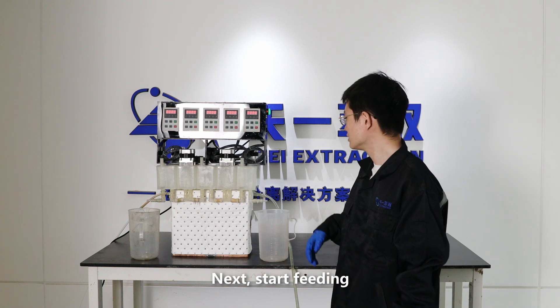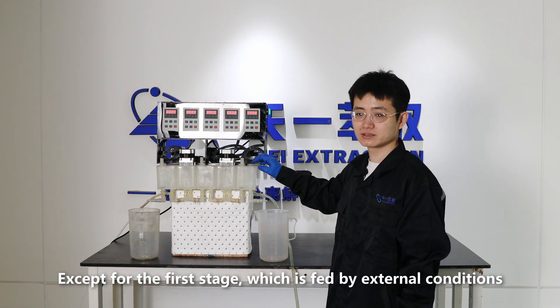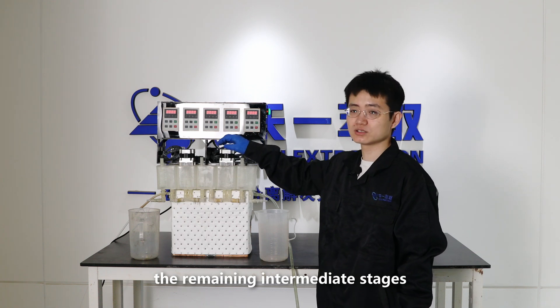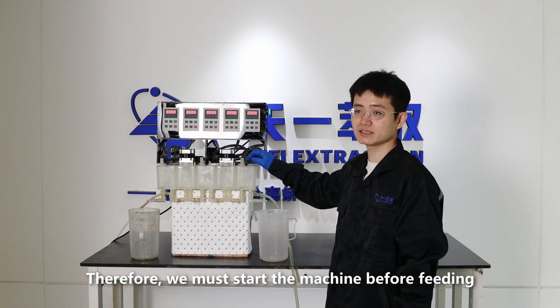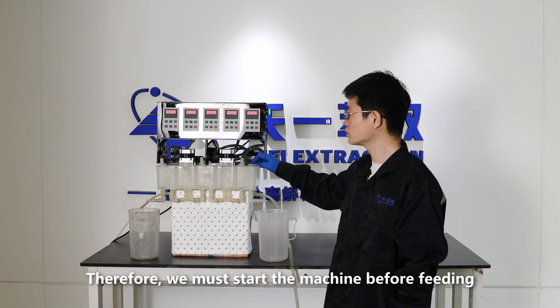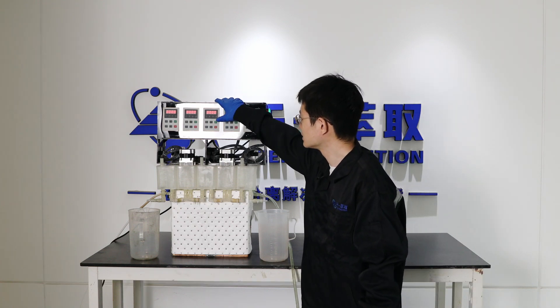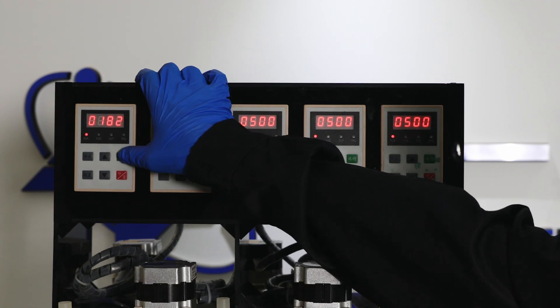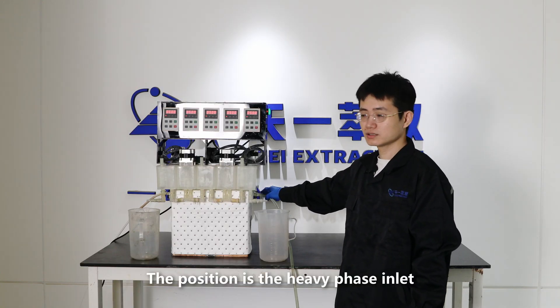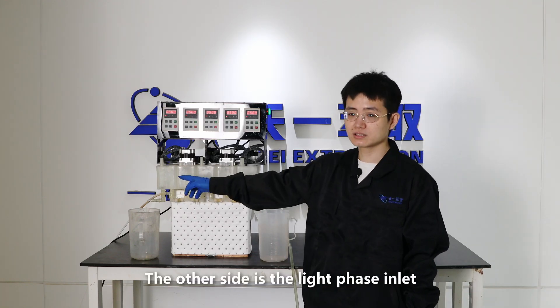Next, start feeding. Except for the first stage, which is fed by external conditions, the remaining intermediate stages are all drawn in by the suction force generated by the mixing impeller. Therefore, we must start the machine before feeding. To ensure that the feed liquid can flow smoothly to the next stage, this controller can be turned on step by step to feed the liquid. This position is the heavy phase inlet. The other side is the light phase inlet.